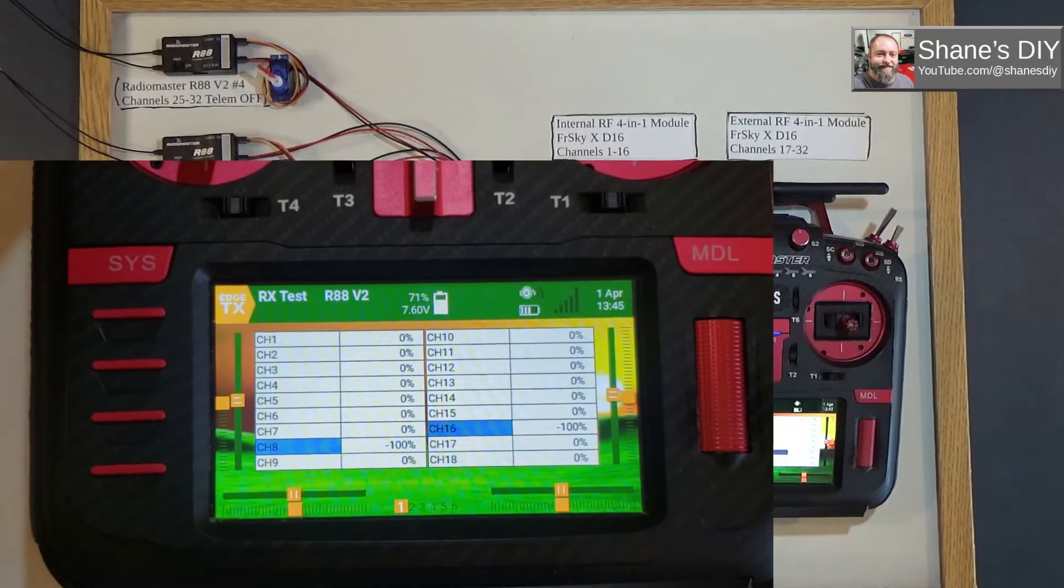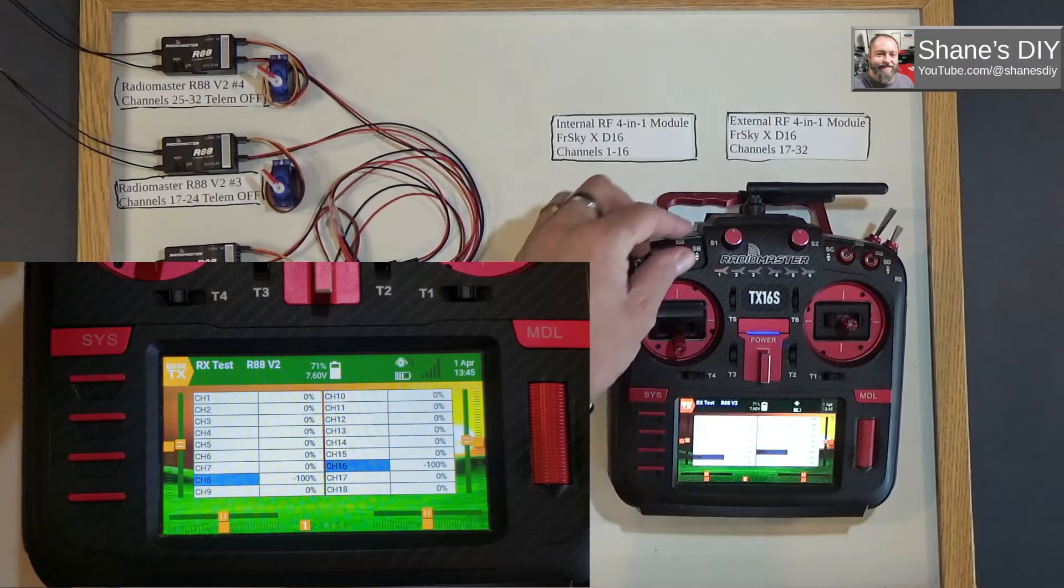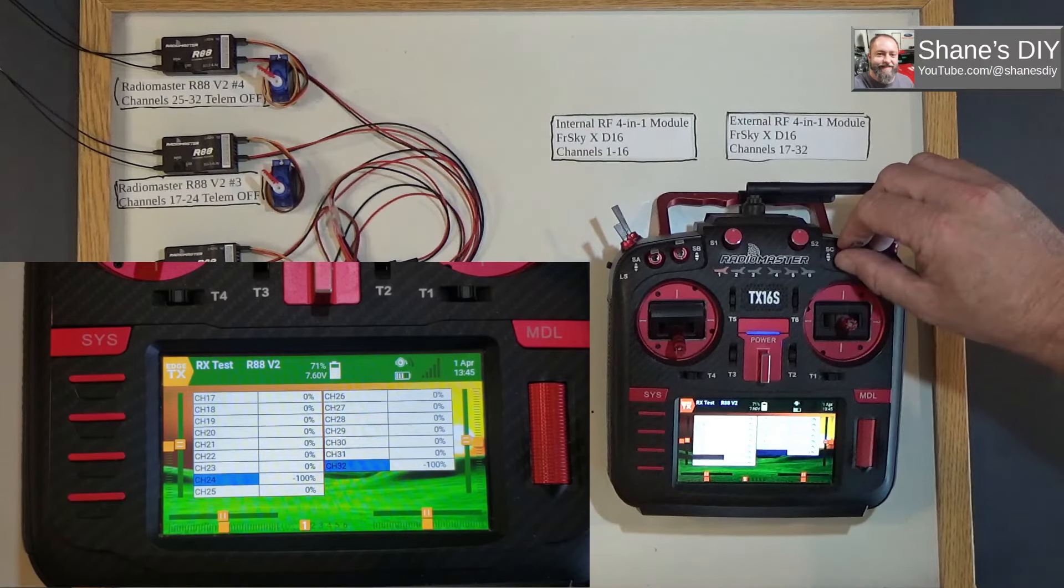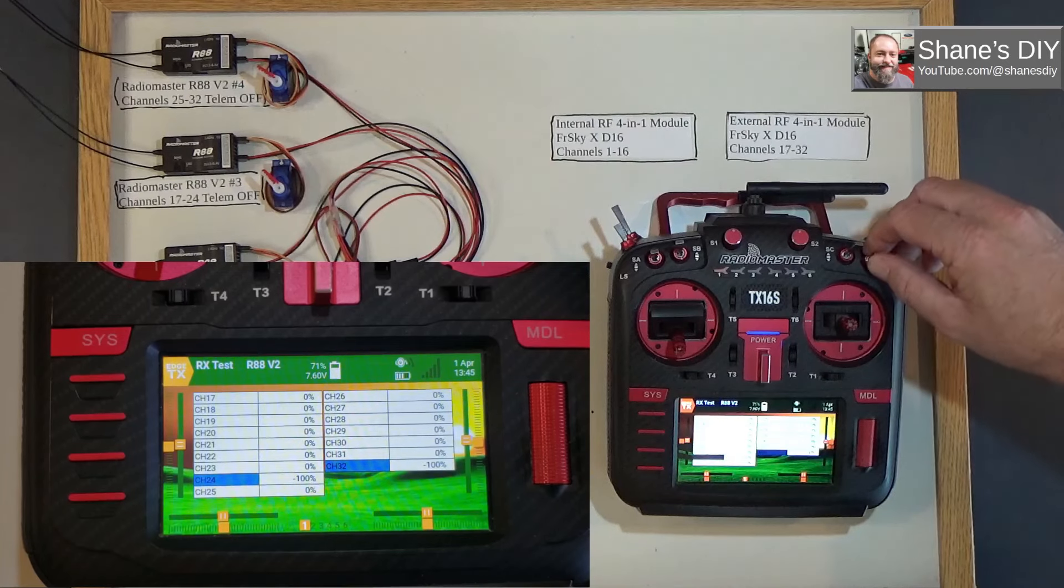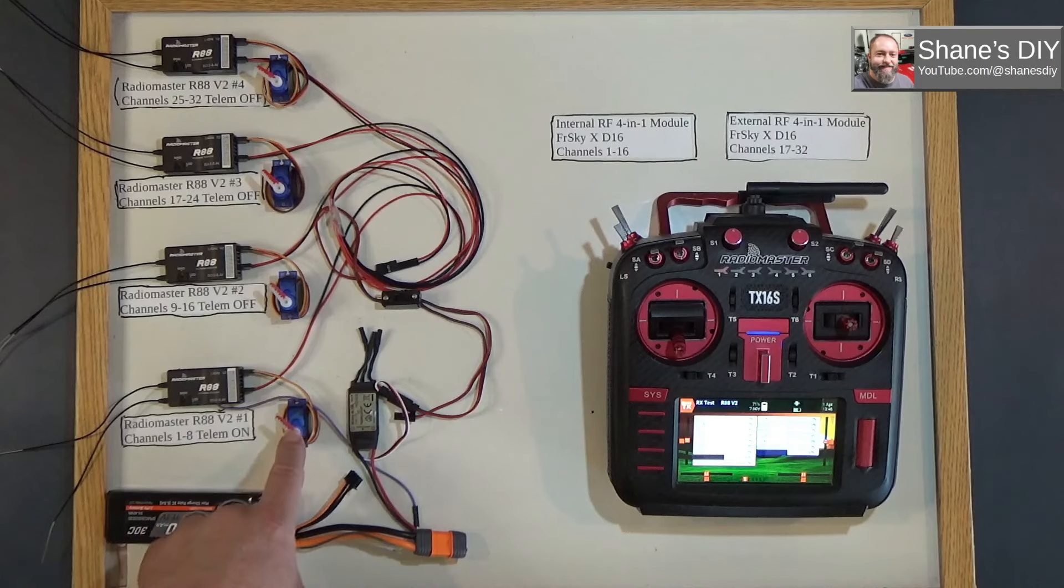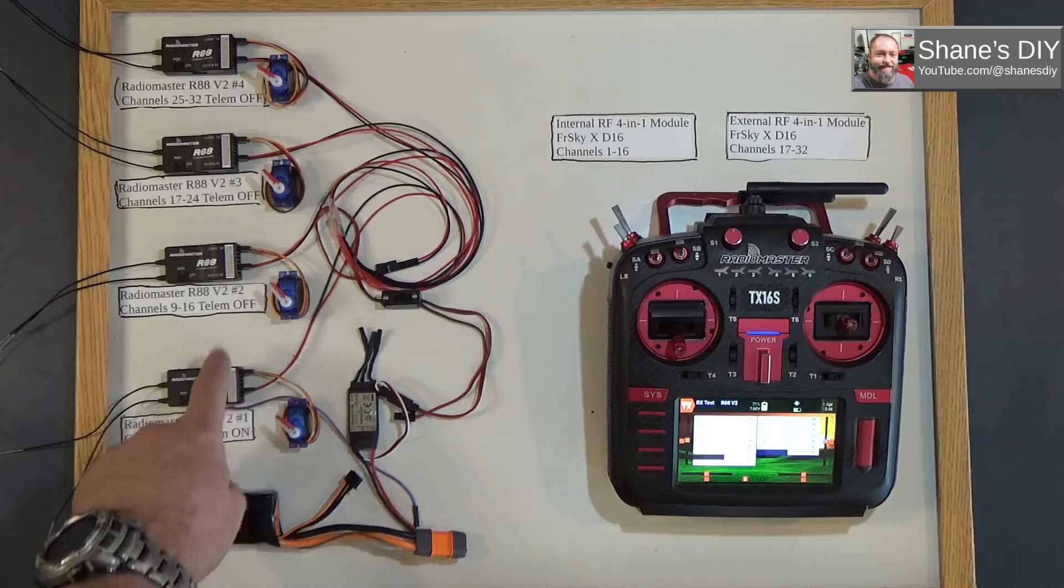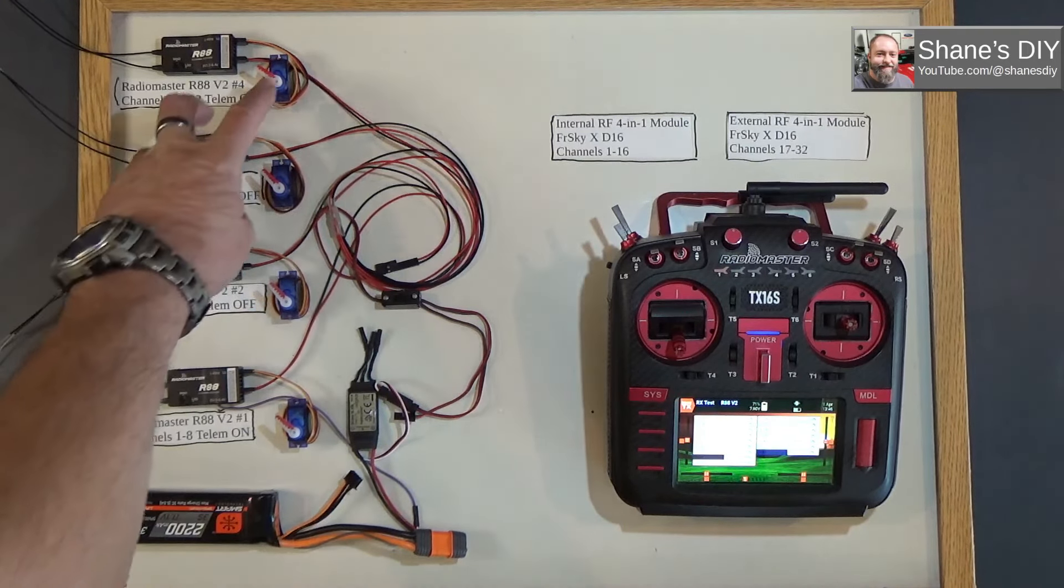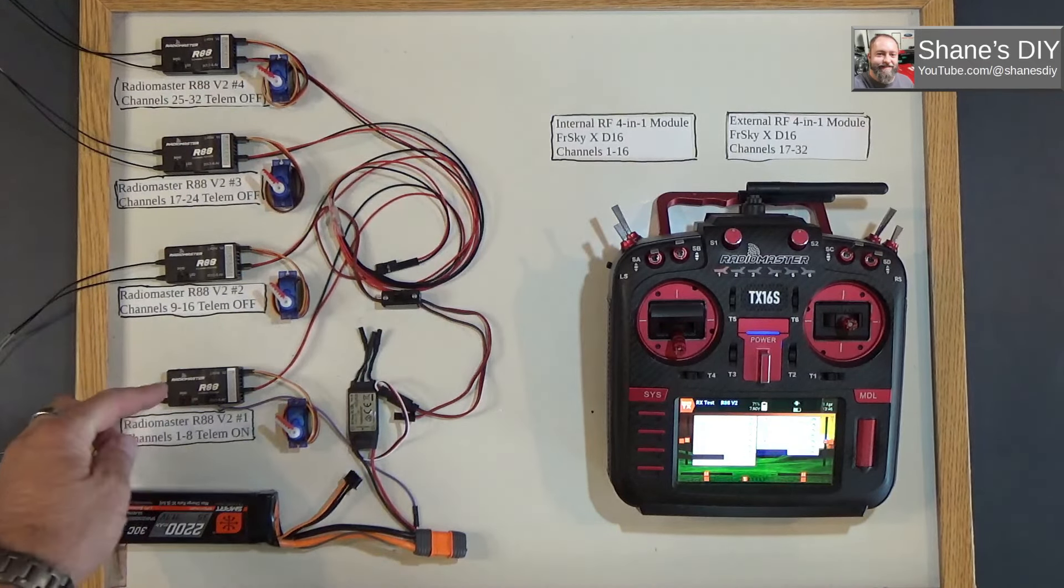I've got this mapped so my SA switch controls channel 8, SB is on 16. If I go to the next page, I've got SC controlling channel 24 and SD controlling channel 32, just so I can demonstrate that I do have those outputs going to servos. I have this linked up to this servo here connected to channel 8 on receiver number 1. This servo is connected to channel 8 on this one, this servo is connected to channel 8 on this one, and then this servo is connected to channel 8 on that one. I just wanted to get the top output for each one.